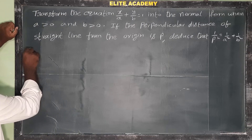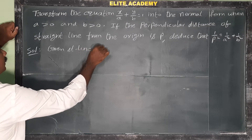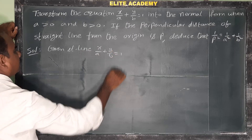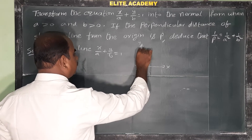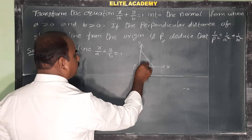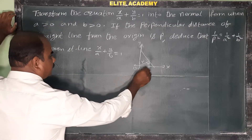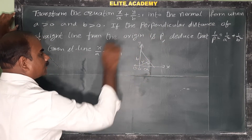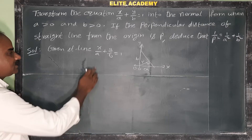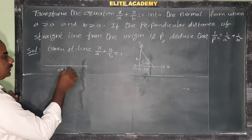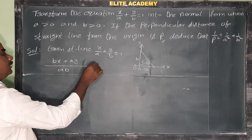Starting the solution: the given straight line is x/a + y/b = 1, where a > 0 and b > 0, so the straight line is in the first quadrant. To convert to general form, we take LCM. The LCM of a and b is ab, so multiplying through gives bx + ay = ab.